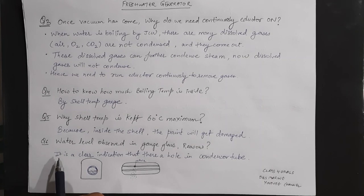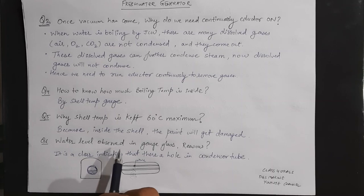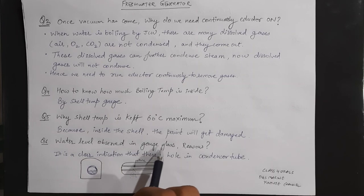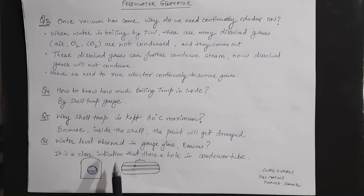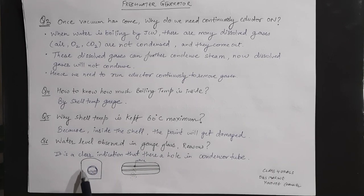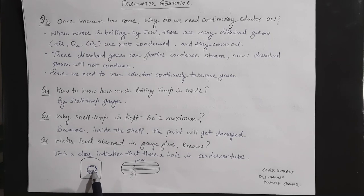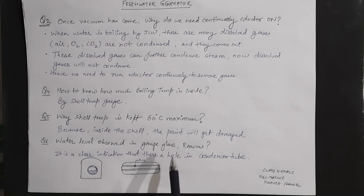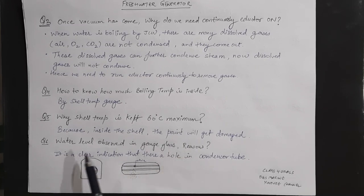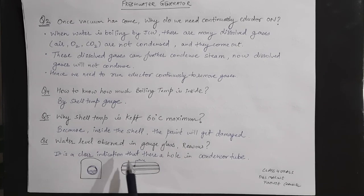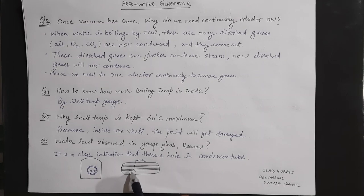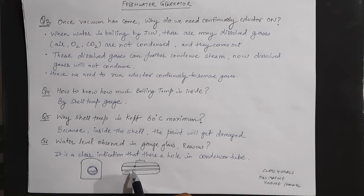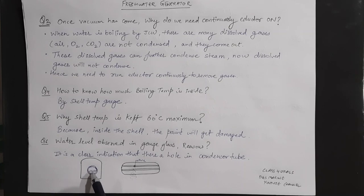Question number 6: water level is observed in the gauge glass of the fresh water generator. Suppose water is being observed here in the gauge glass. What is the reason for this? It is a clear indication that there is a hole in the condenser tube, and water is being leaked from this hole, filling the level area of the gauge glass.